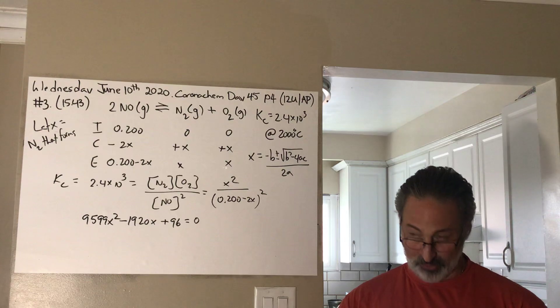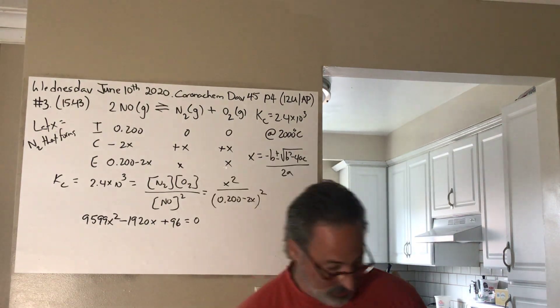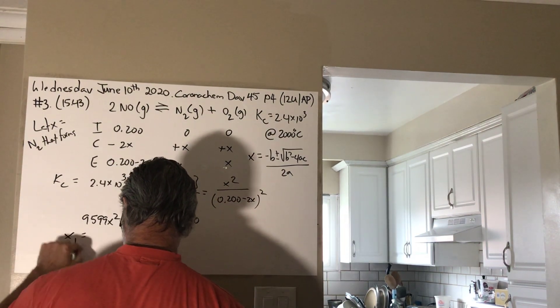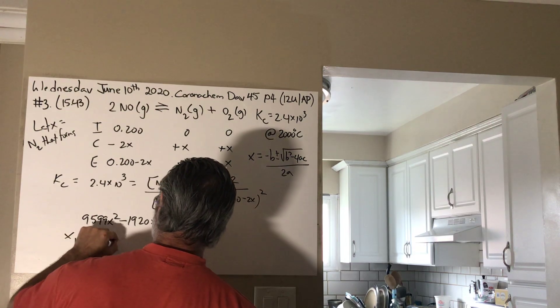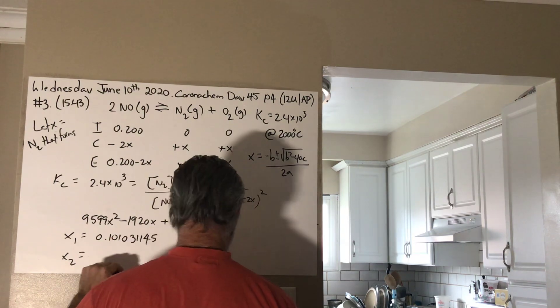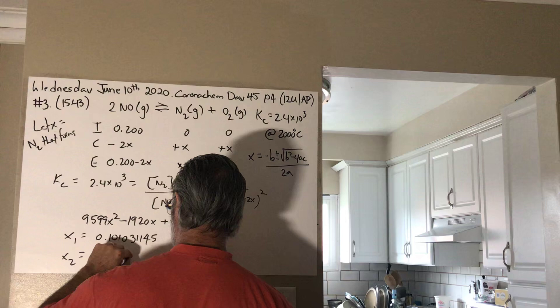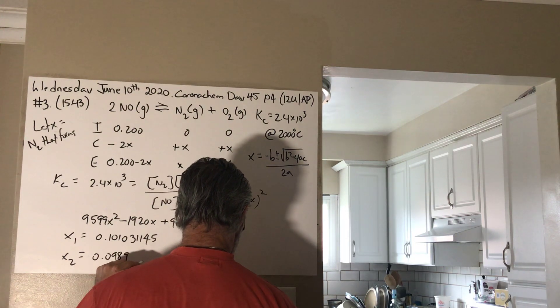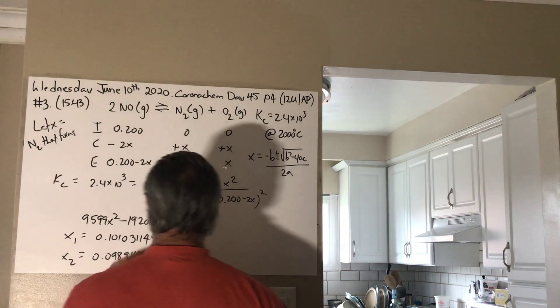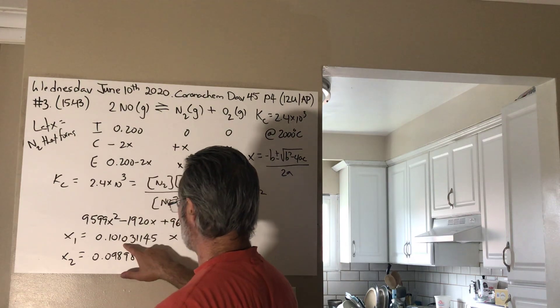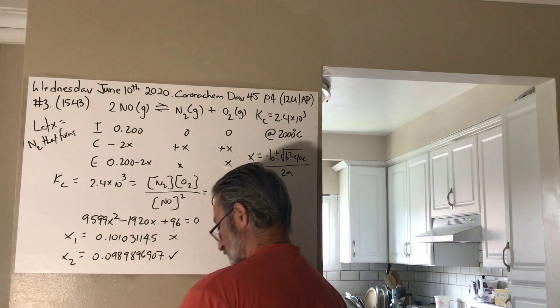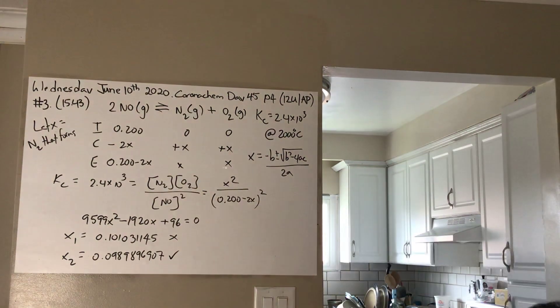Two answers are possible, so plug them into the equilibrium expression to obtain the real one. Obviously, you can't have twice this constant. Okay. I'll give you the two answers and I'll show you why one of them is impossible. So, you get two answers from your quadratic formula. You get 0.101, 0, 3, 1, 1, 4, 5. That's one possibility. And the other possibility is 0.098989896907. This one is impossible. Because if you subtract two times this from 0.2, you get a number below zero. So, this cannot be a possibility. It's got to be this one. So, let's write down the final answers as a result of that conclusion.